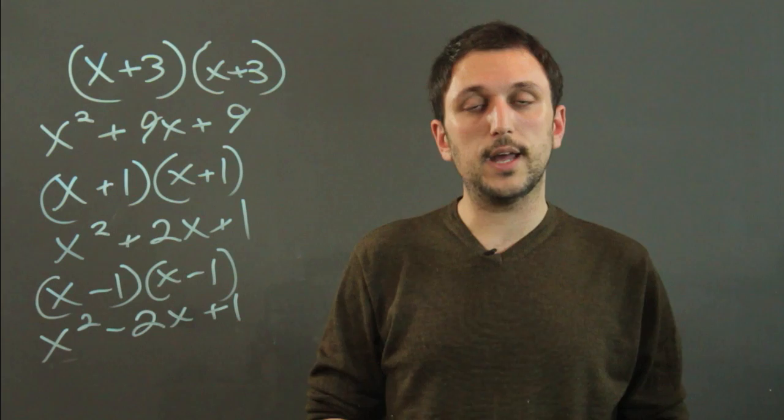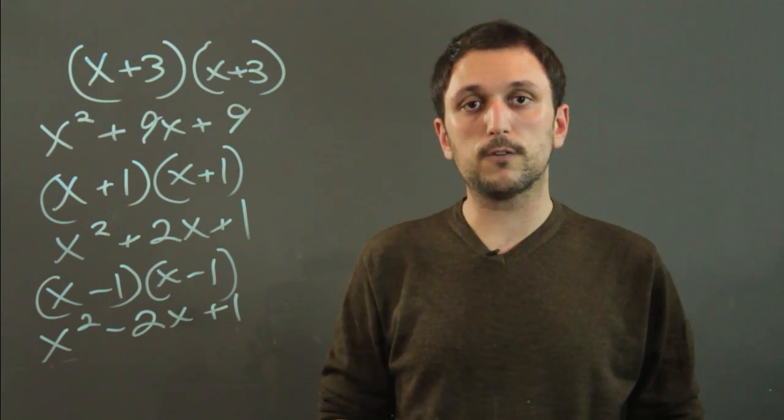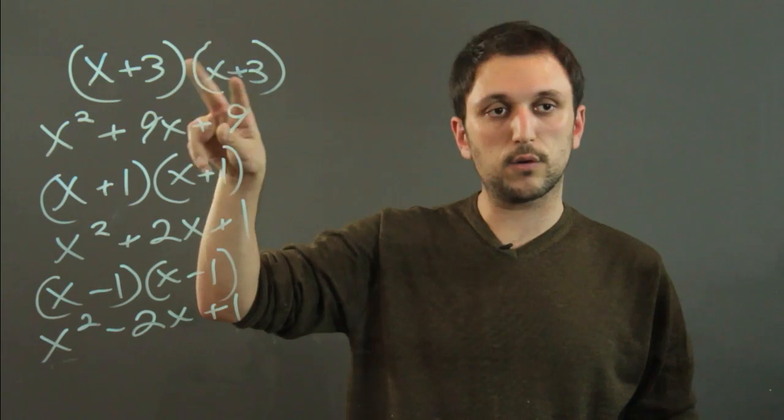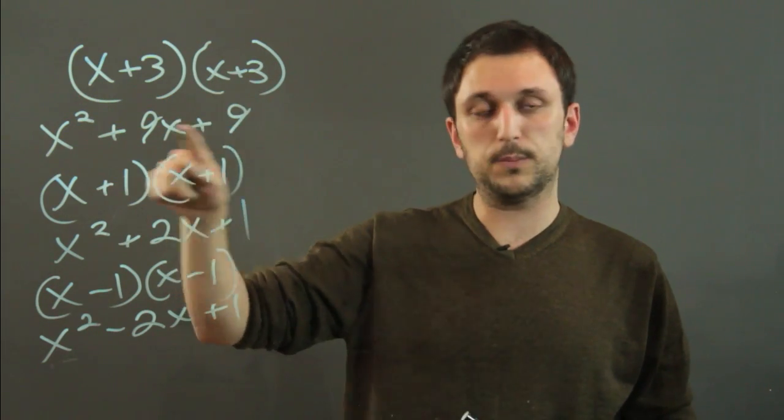So I'm Charlie Kasov, and you just learned how to make a quadratic expression a perfect square. Just take your two factored expressions, make them identical, and multiply them together.